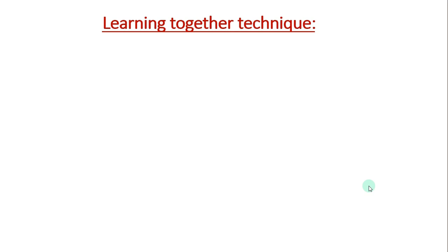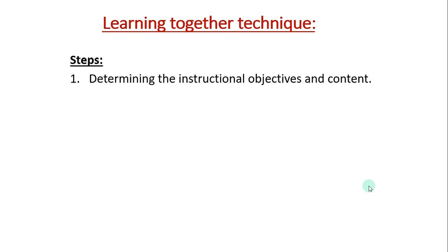So, what is the learning together technique? Here, what are the steps we have to follow by using this technique. First is determining the instructional objectives and content — what objectives we are going to achieve in the particular class and what content we are going to learn, that we have to decide.